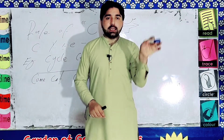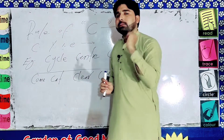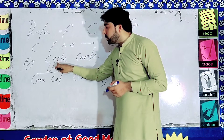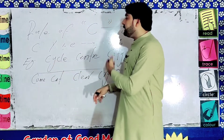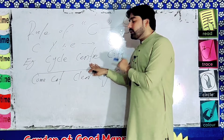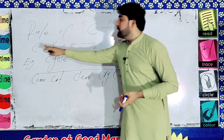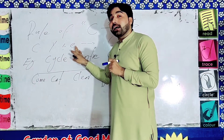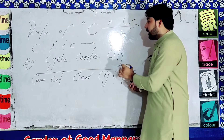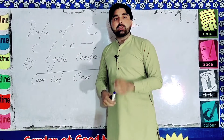ہم C کو وہاں پر صحیح pronounce کریں گے — example بھی یہاں پر میں نے لکھے ہیں تاکہ آپ اور clear ہو جائیں۔ یہاں پر example لکھا ہے: 'cycle' — C کے بعد Y ہے، تو ہم automatically سمجھ سکتے ہیں C کے بعد Y آئے تو S sound کریں گے: 'cycle'۔ اس کے بعد 'center' — C کے بعد E ہے، جب بھی C کے بعد E آئے تو ہمیشہ S sound کریں۔ پھر 'city' — C کے بعد I ہے۔ اگر C کے بعد Y، E، یا I آئے تو ہمیشہ C کو S پڑھتے ہیں۔